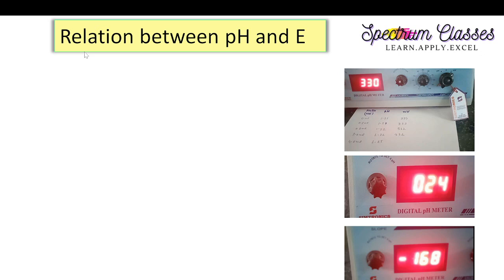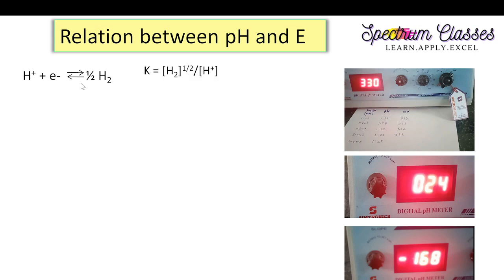So here we are going to derive the relationship between pH and electrode potential — how these two are related. First, we consider the equation in which we have the H⁺ ion concentration. On reduction it produces H₂ gas, and to balance it I have divided by one-half. So here the hydrogen gas is produced like this.